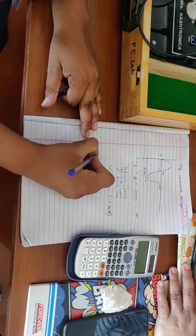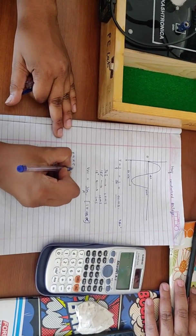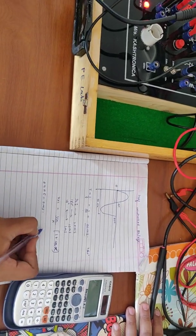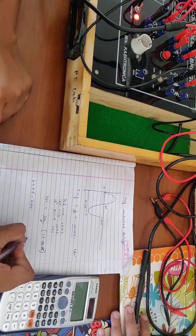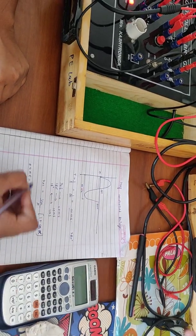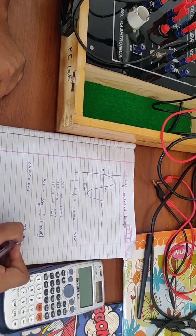So 0.4 into 5 equals 2 milliseconds. And this 2 milliseconds, since 1 millisecond corresponds to 18 degrees.